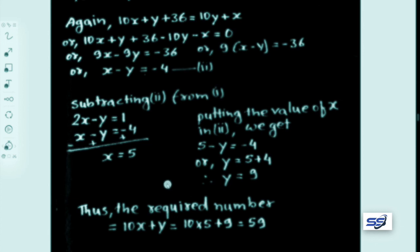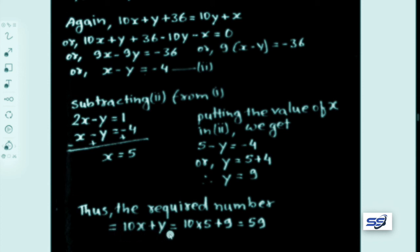With x equals 5 and y equals 9, the required two-digit number is 10x plus y equals 10 into 5 plus 9 equals 59. So 59 is our required two-digit number.